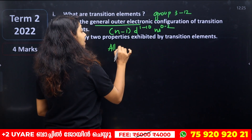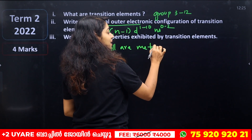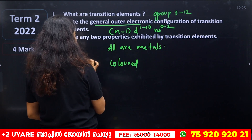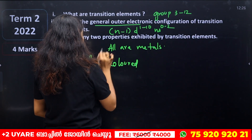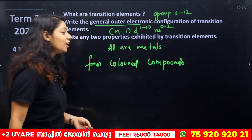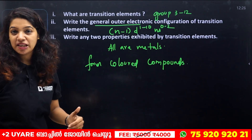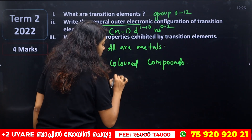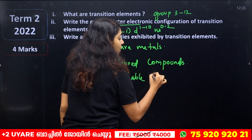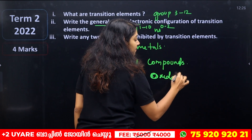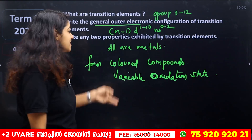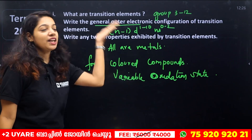Write any two properties of transition elements. First, they are all metals. Second, they form colored compounds. Third, they exhibit variable oxidation states.